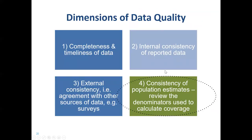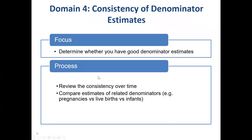And finally, consistency of population estimates — or denominator estimates. There are a couple of things that should be assessed about the denominators: one is whether they are consistent from year to year, and the second is whether related denominators — numbers such as the number of pregnancies, the number of live births, and the number of infants — are consistent between each other.